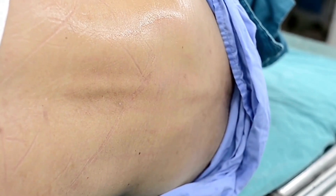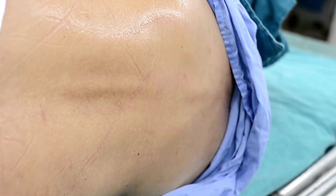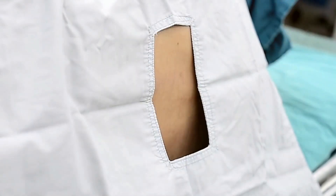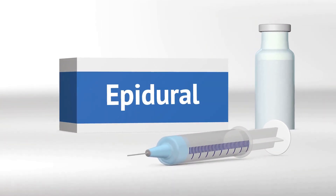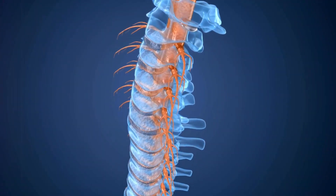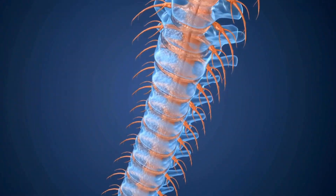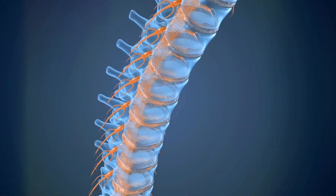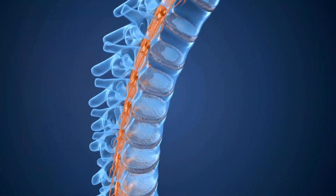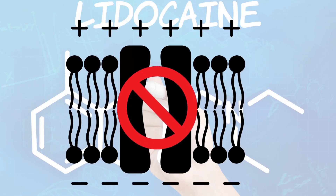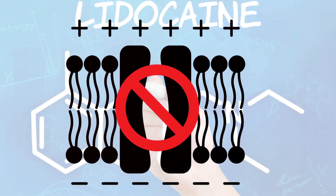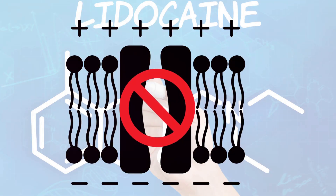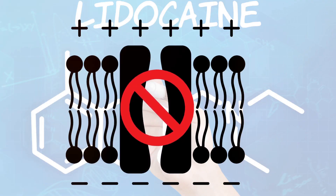Next, we have regional anaesthesia. This type blocks pain in a specific area of the body. It's commonly used during childbirth or surgeries involving the lower body. Anaesthetics are injected near nerves to interrupt pain signals to the brain. Drugs like bupavacaine or lidocaine block sodium channels in nerve cells, preventing the transmission of nerve impulses. This means the targeted area becomes numb and pain-free.